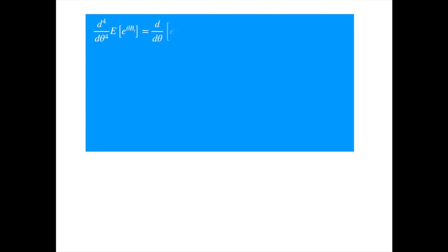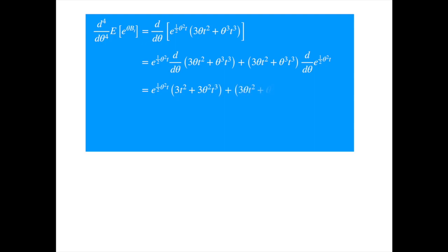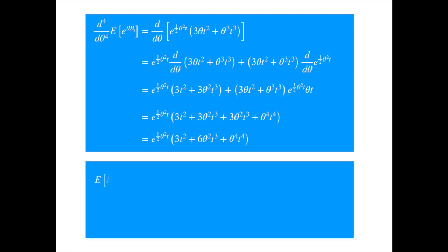Finally, for the fourth moment, we differentiate the third derivative of the moment-generating function formula that we just derived. Applying the product rule, evaluating the derivatives, factoring the exponential, and simplifying, we get an expression. Now we set theta equal to zero to get the fourth moment. Substituting and then setting theta to zero, we get the formula for the fourth moment.